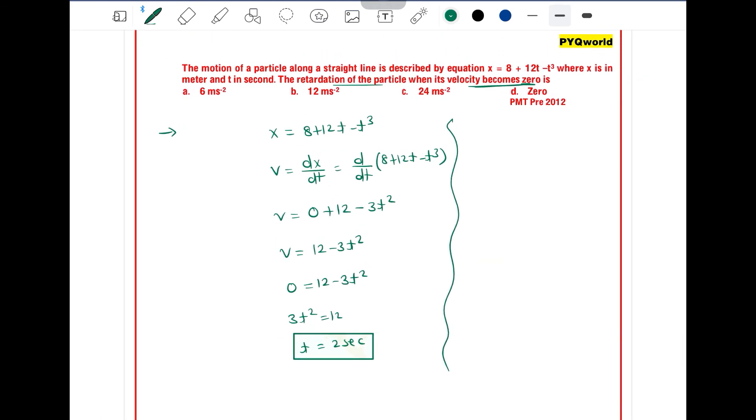Acceleration can be written as a = dv/dt. So acceleration equals d/dt(12 - 3t²). Differentiation of 12 is 0, differentiation of 3t² is 6t, so acceleration equals -6t.